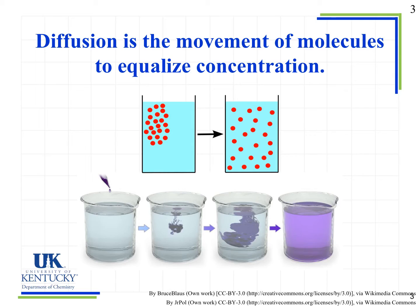Diffusion is the movement of molecules to equalize concentration. What we see happening is we don't have a semi-permeable membrane, we don't have two distinct solutions — we just have a single solution with varying concentrations.